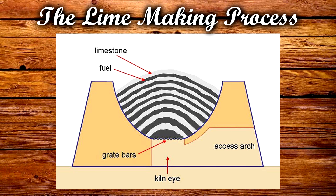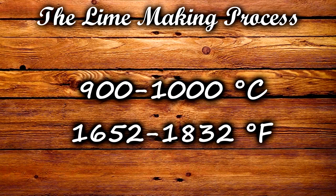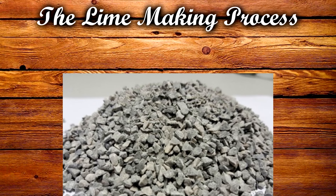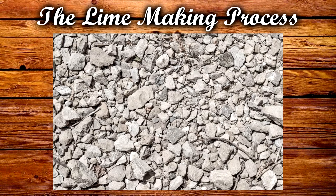The best quicklime is produced at a temperature of about 900 to 1,000 degrees Celsius. If the temperature got too high, unreactive dead-burnt lime was created. And where the temperature wasn't high enough, the limestone remained unburnt.